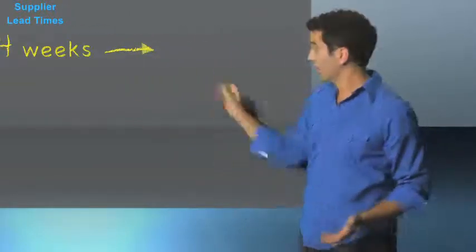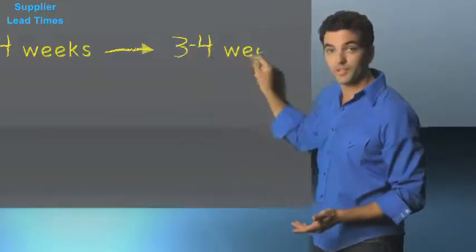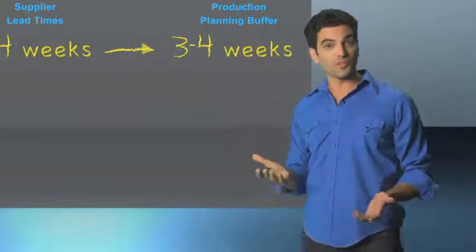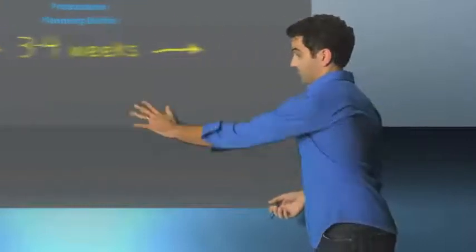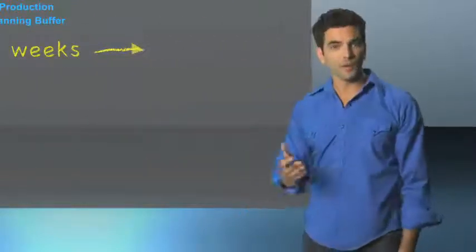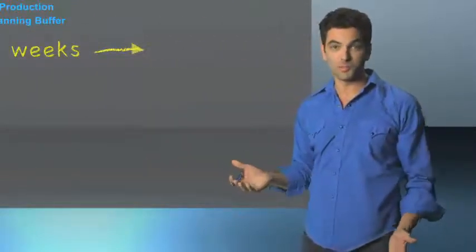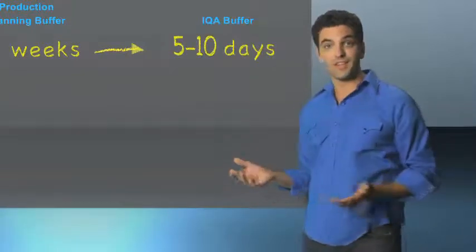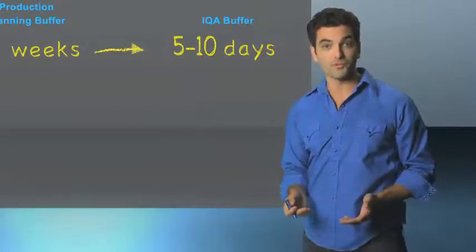Your planners must leave another three to four weeks to ensure all components arrive before production. Then, incoming quality inspection typically needs between five and ten days before releasing product to the production floor.